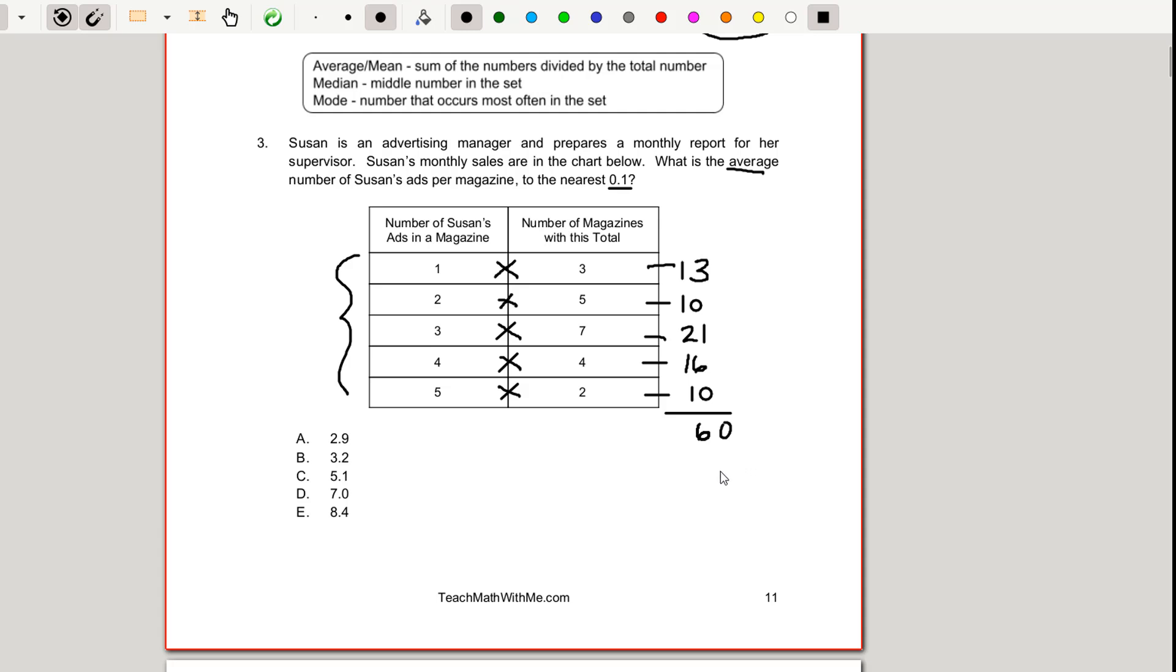60 total ads in how many? We're looking for ads per magazine. 60 ads in how many magazines? Well here's the number of magazines in this column here. Three plus five is eight plus seven is 15 plus four is 19 plus two is 21. So we have 21 total magazines. Now we may want to use our calculator because we're going to have some kind of decimal. 60 divided by 21 and I get 2.857 and we're told to round to one decimal point. We're going to round up to 2.9 based on this five here and that is answer choice A.